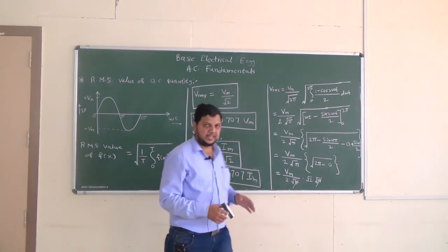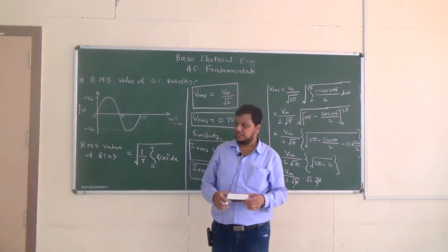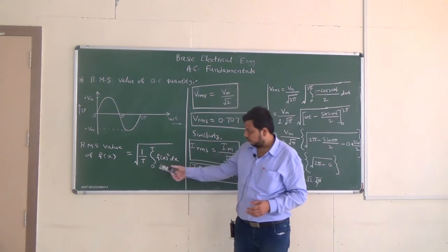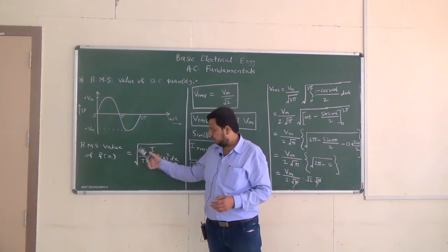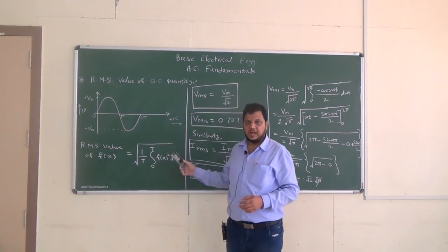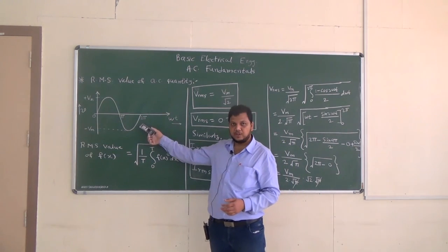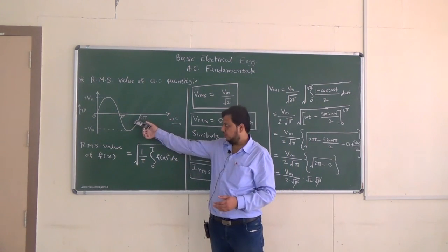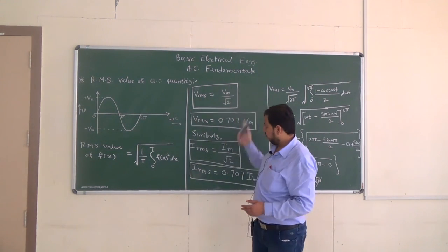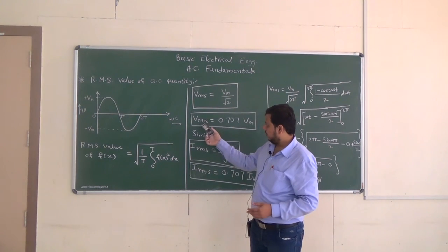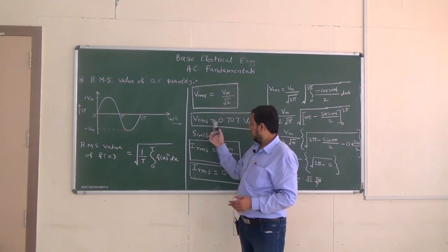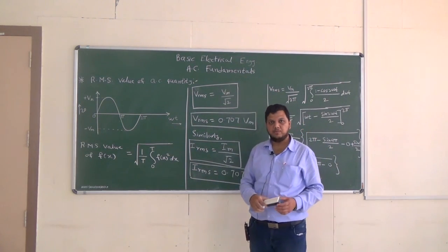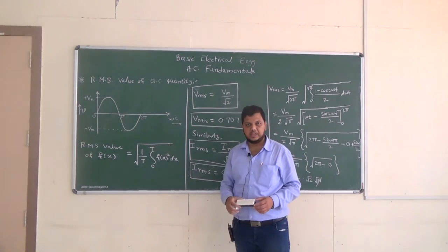In this way we can derive the RMS value of an AC quantity. The general formula for RMS value has been shown. In our case, with a sinusoidal AC voltage, we obtained RMS value = 0.707 times the maximum value. Thank you.